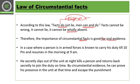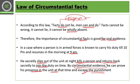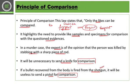In a case where a person in the armed forces is known to be on duty till 10 p.m. and resumes it at 9 a.m., if he secretly slips out of his unit at night, kills a person, and returns secretly to join duty on time — by circumstantial facts, he can prove his presence was at the unit at the time of the crime and escape punishment. So circumstantial facts are really very important. This is the last, seventh principle of forensic science — the law of circumstantial facts.